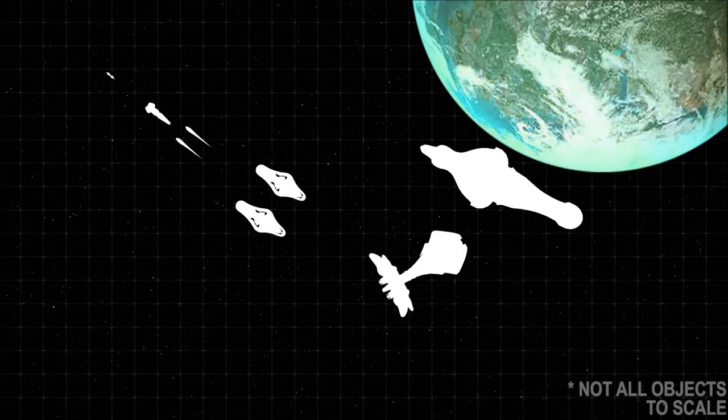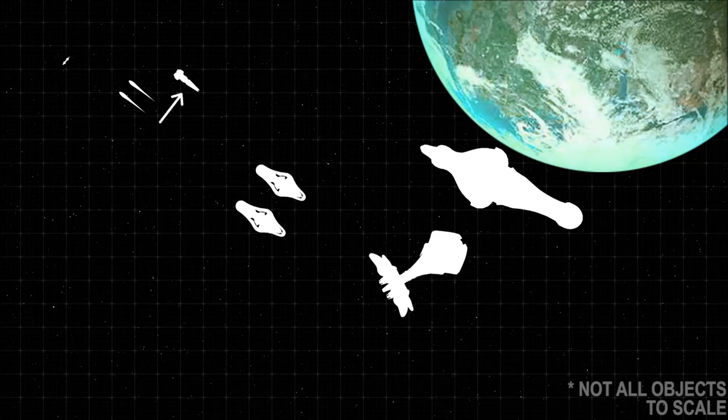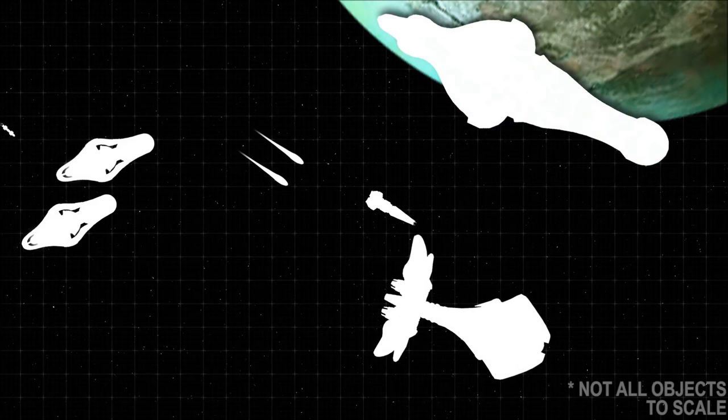The plasma torpedoes from the frigates quickly approached, but Keyes managed to avoid them at the last second with the Iroquois' emergency thrusters. The ship then resumed its collision course. Behind them, the plasma torpedoes changed course, tracking the Iroquois.